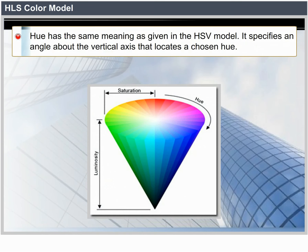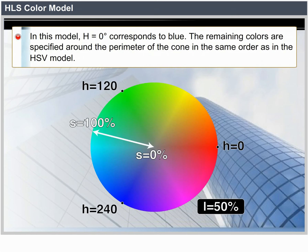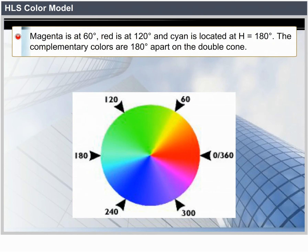Hue has the same meaning as in the HSV model — it specifies an angle about the vertical axis that locates a chosen hue. In this model, H equals 0 corresponds to blue. The remaining colors are specified around the perimeter of the cone in the same order as in the HSV model. Magenta is at 60 degrees, red is at 120 degrees, and cyan is located at H equals 180 degrees. Complementary colors are 180 degrees apart on the double cone.